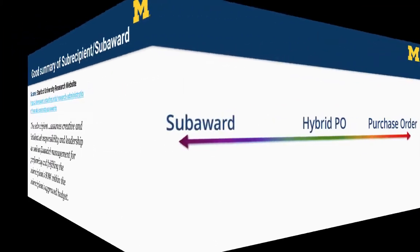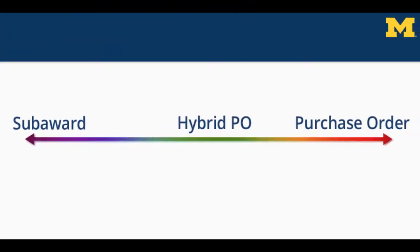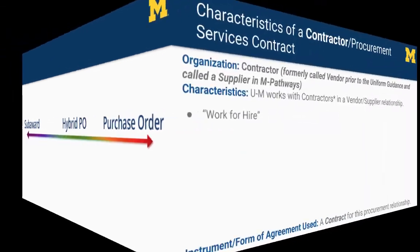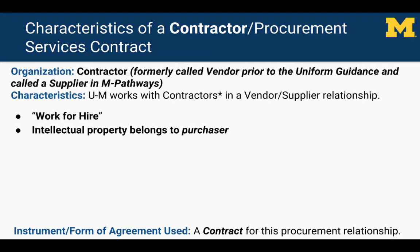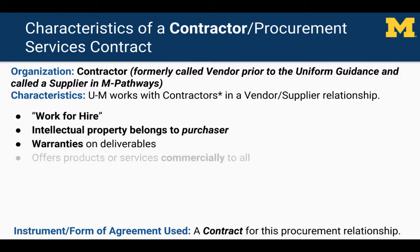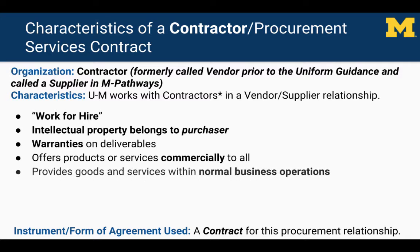Let's look at the other end of the spectrum — the purchase order. A procurement services contract or purchase order is a traditional commercial transaction. When U of M enters into this type of agreement, it is usually work-for-hire. Along with the purchase, U of M expects to own all the intellectual property, including the contractor's notes. There are warranties and performance expectations consistent with industry standards. U of M can expect the contractor to offer products or services commercially to any organization, provide goods and services within normal business operations, and operate in a competitive environment.